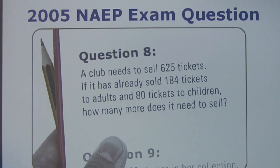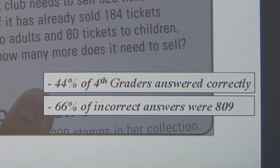Here's an example — a fourth grade NAEP item — also to help us break down why students struggle. A club needs to sell 625 tickets. If it has already sold 184 tickets to adults and 80 tickets to children, how many more does it need to sell? Given this question, what do you think was the most common response? Forty-four percent of children answered this correctly, meaning more than half answered it wrong. Sixty-six percent of those who answered incorrectly picked 809.